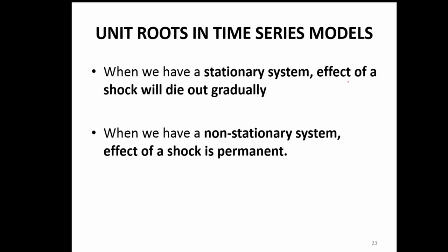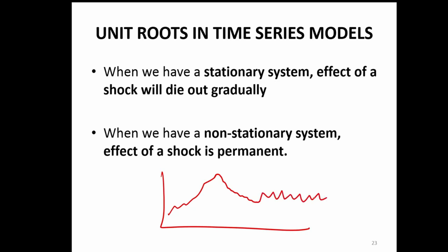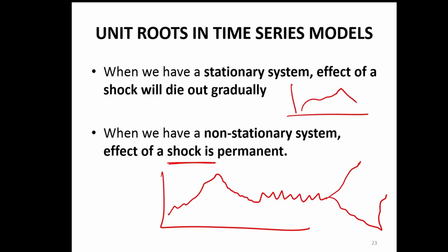We need to statistically test that. When we have a stationary system, we know for sure that the effect of any shock that is going to happen to the time series will die out gradually. In a stationary series, if you have a shock, it moves up and eventually comes down, reverting to the mean. But that's not the case in a non-stationary system — in a non-stationary system, if there is a shock and something goes up, it never comes back down to the mean. It never approaches the long-run mean.